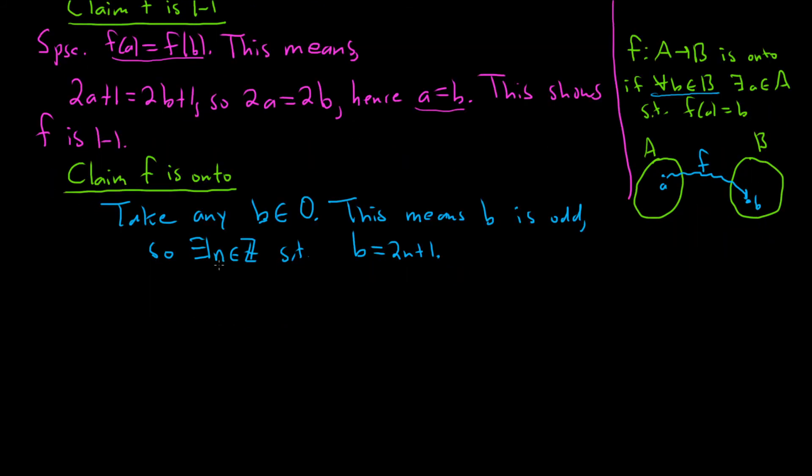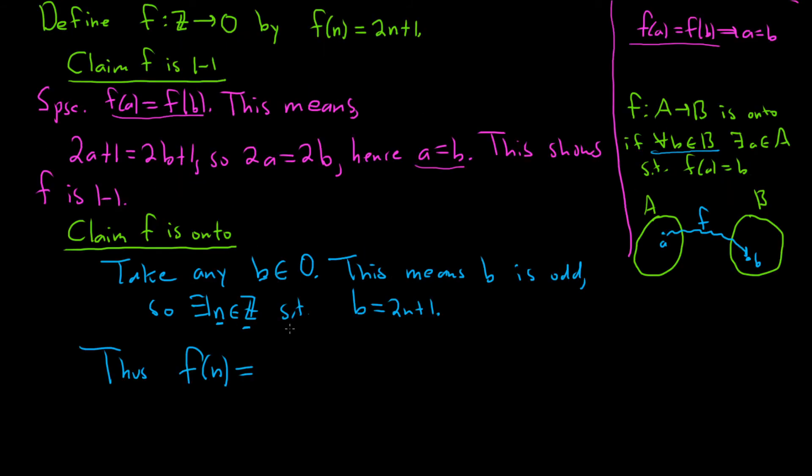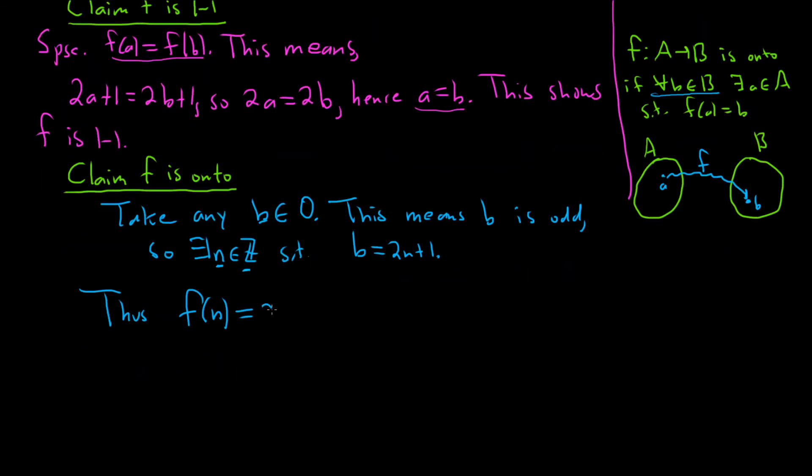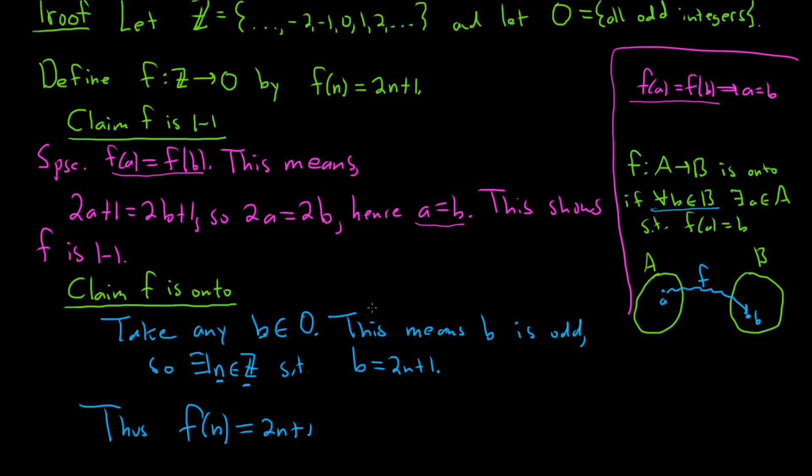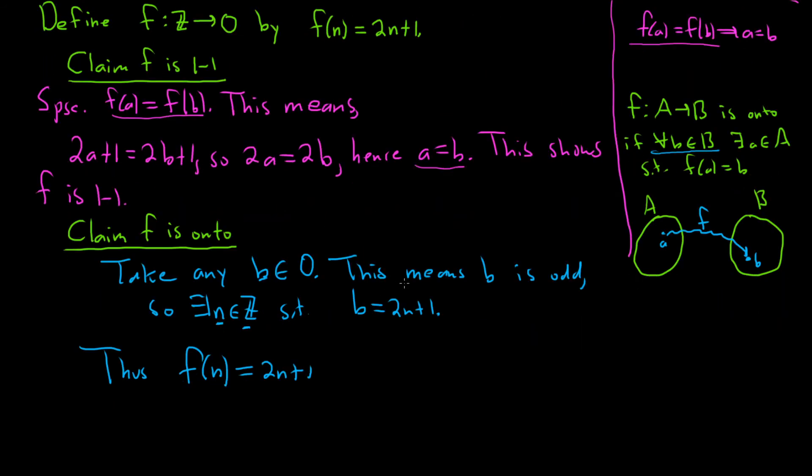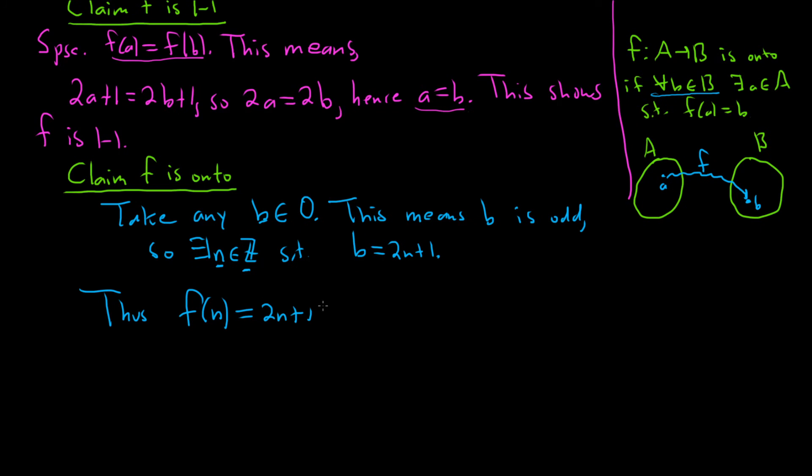Oh, look at that. n is in Z. That's the domain of our function, right? Remember, it was from Z into O. It worked out perfectly. So thus, f of n, well, using the definition of our function, is simply 2n plus 1. This is by definition of our function. We defined it to be 2n plus 1 on purpose. And then 2n plus 1 is equal to b.